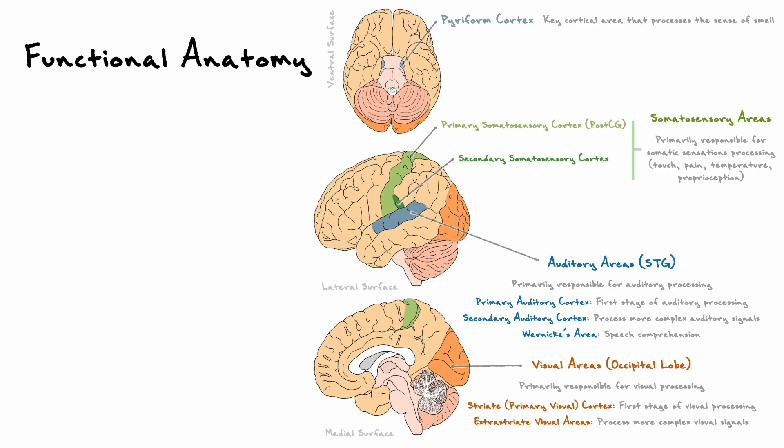In the somatosensory system, which is responsible for processing somatic sensations like touch, pain, temperature, and proprioception, it also has primary and secondary areas that process different levels of complexity for a given sense. Note that the primary somatosensory cortex is located in the post-central gyrus.